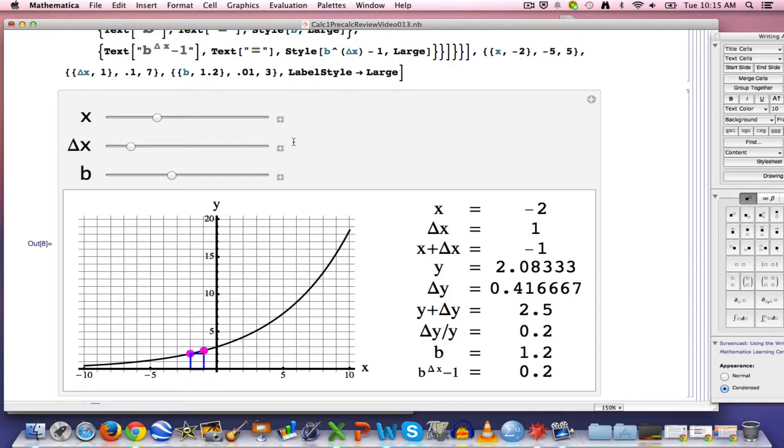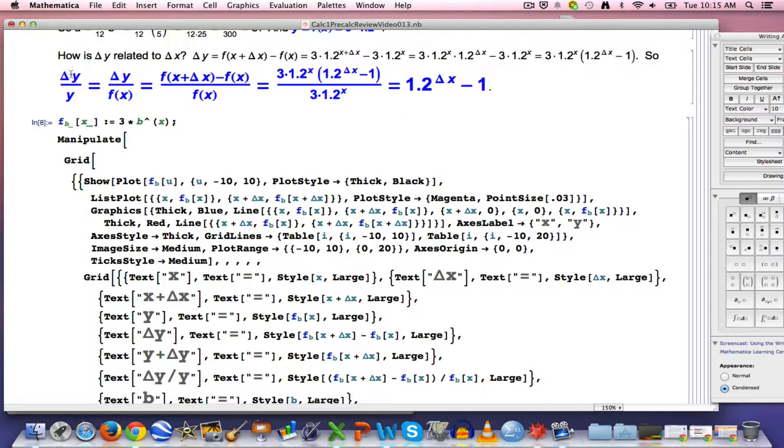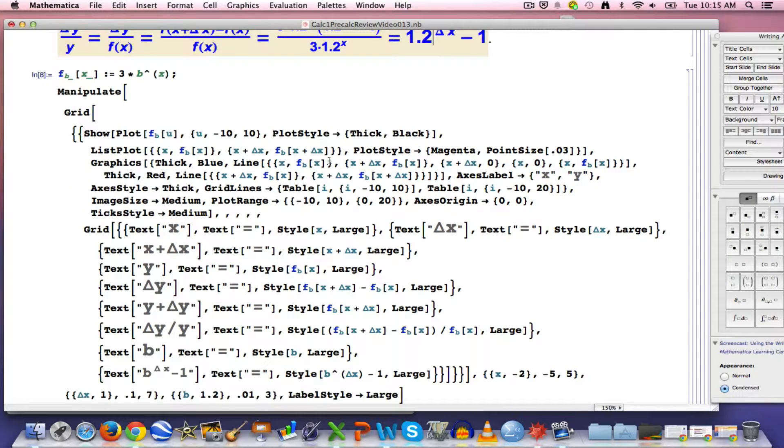What's the general principle? The general principle is that the relative change in Y, delta Y divided by Y, is essentially B to the delta X power minus 1. And that's ultimately going to be the general principle that we prove. I'll go back to putting a 1.2 here. Let's illustrate this now with this code.